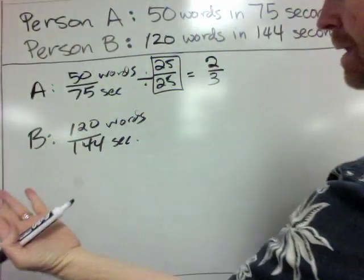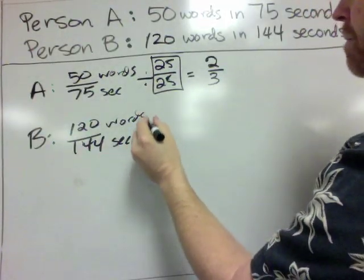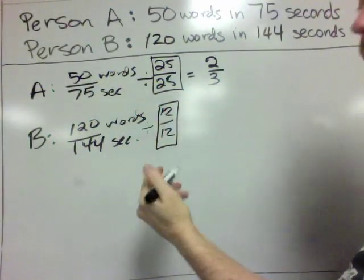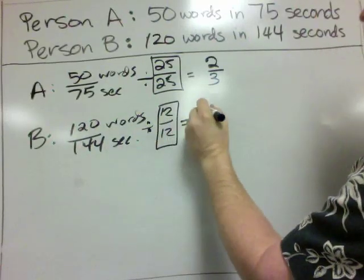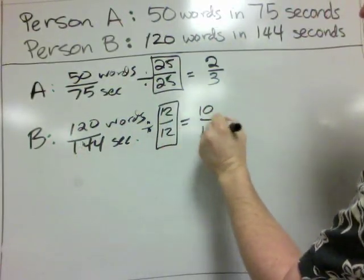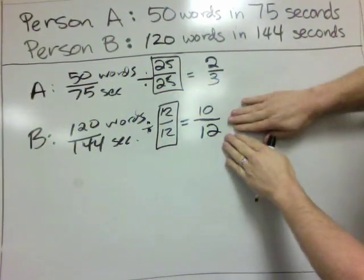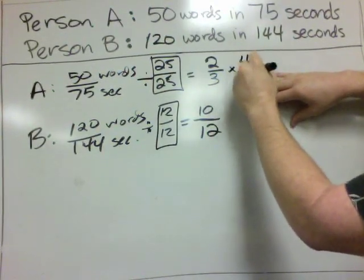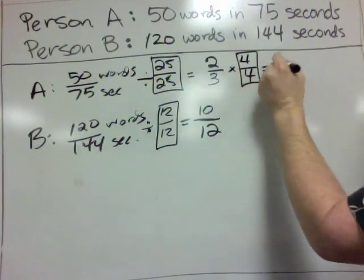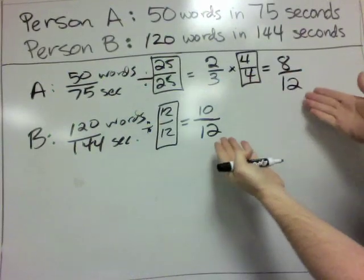And then down here, let's see. I can see that 12 goes into both of these, so I'm going to divide them both by 12. 12 over 12 means I'm dividing by 1. And 120 divided by 12 is 10, and 144 divided by 12 is 12. Now it's really easy to see how to get a common denominator. I'm going to leave this one alone. I'm going to multiply this guy by 4 over 4. So 2 times 4 is 8, 3 times 4 is 12. So now we've got our common denominators.